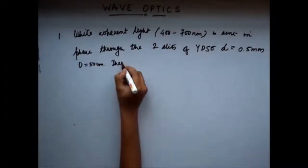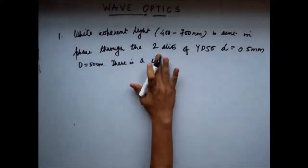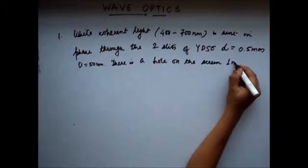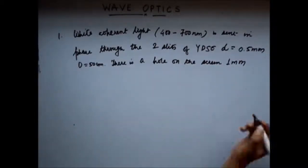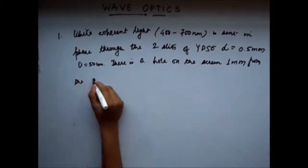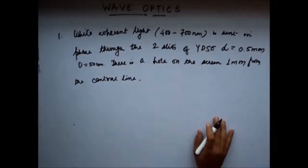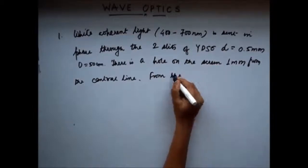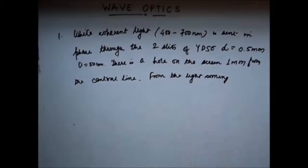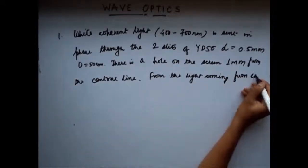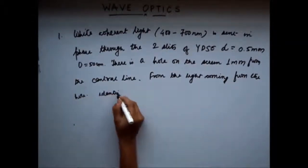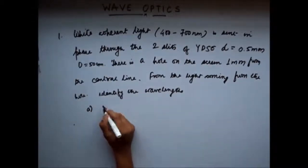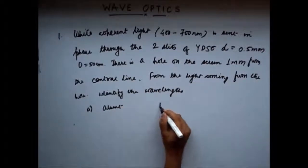There is a hole on the screen, one millimeter from the center line. The question is: from the light coming from the hole, identify the wavelengths which have intensities that are absent, and which have strong intensity.